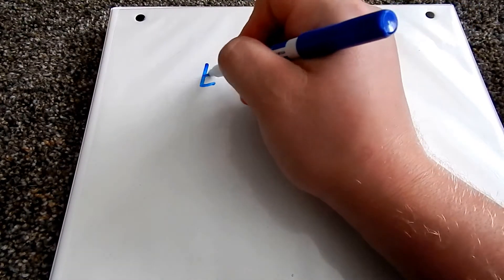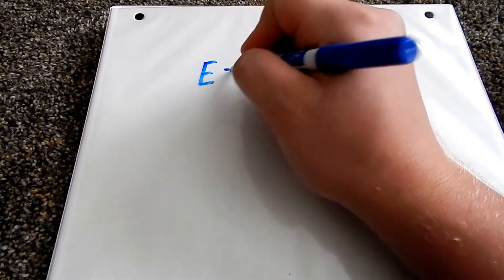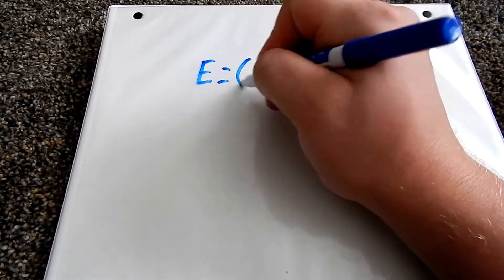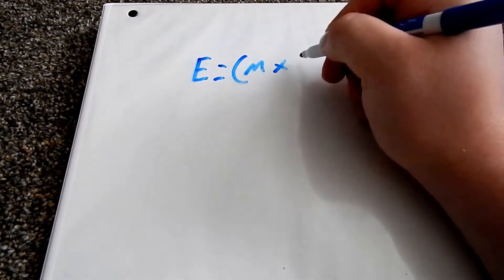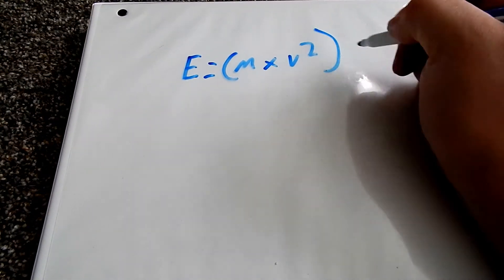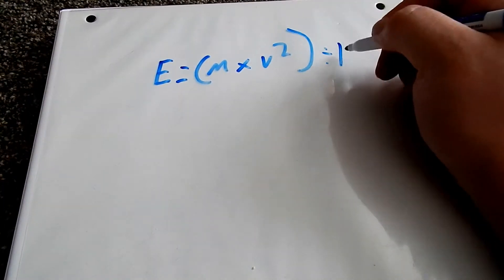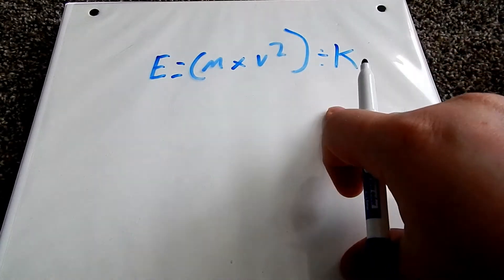So that formula is energy equals mass times velocity squared divided by k.